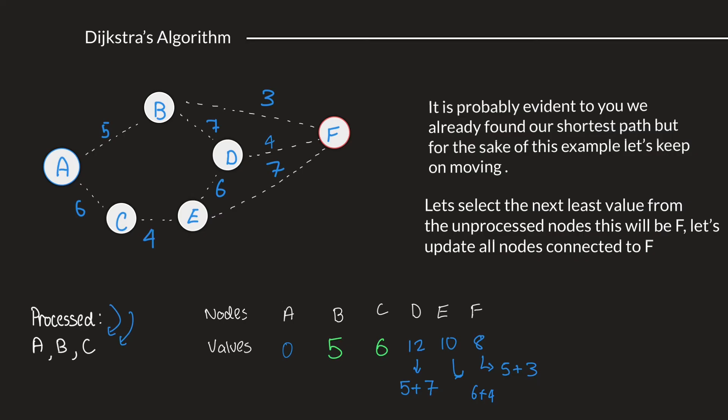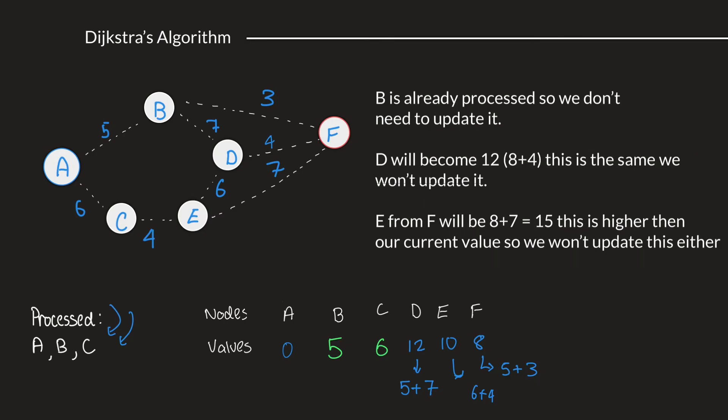That would be B, D, and E. What we see is that B is already in the list of processed nodes. So, we don't really need to update it. Next, we have D. If we take the path from A, B, and then B to F, and then F to D, it will become 8 plus 4, which is 12. And 12 is already the same value as we have right now. So, paths A, B, D, and A, B, F, D have the same value. So, it's no use updating this value.